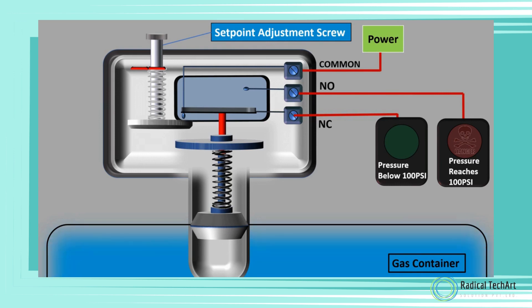The inlet pressure from the container is applied to the bottom of the operating piston, and during normal operation when the pressure inside the container is below 100 PSI, the normally closed circuit will be powered and green light will be on. We had already adjusted the tension of the range spring using setpoint adjustment screw so that it gets compressed when the inlet pressure reaches the setpoint.